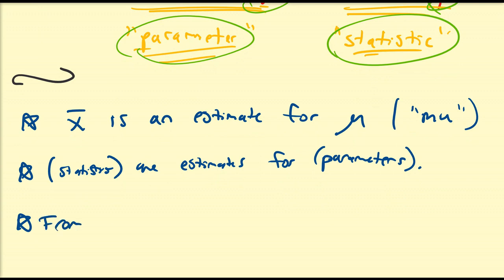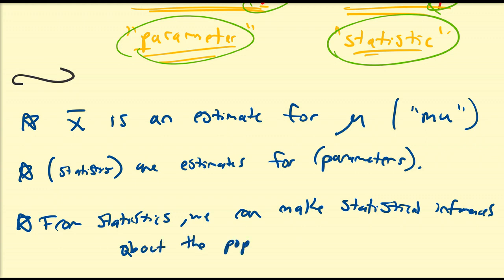And from statistics, and this is pretty much what the course talks about, we can make statistical inferences about the population. Either about the population or, naturally, the population parameters, because the parameters describe about the population.